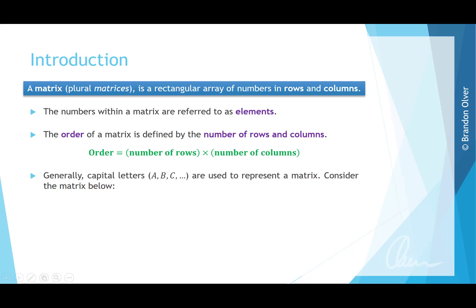Generally we use capital letters such as A, B, and C to represent a matrix. So we can say that matrix A is equal to this rectangular array, which has 2 rows. So its order is 2 times 3 columns, making it a 2 by 3 rectangular matrix called A.